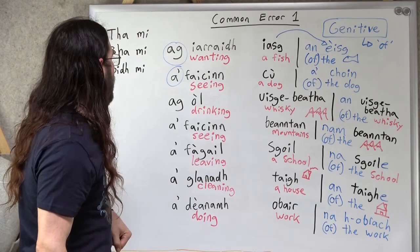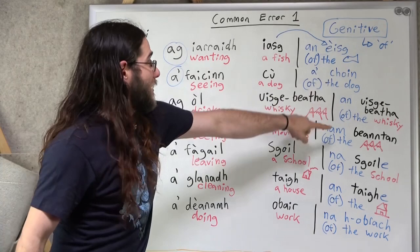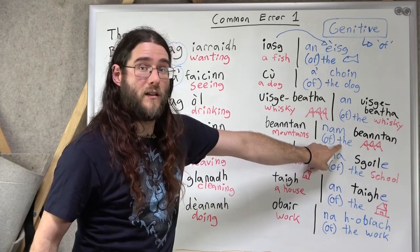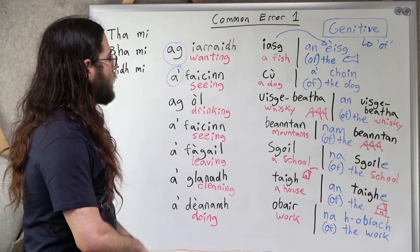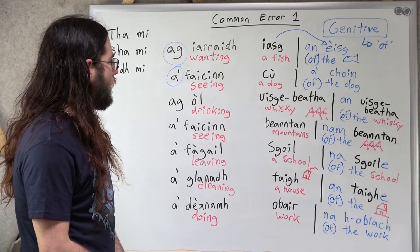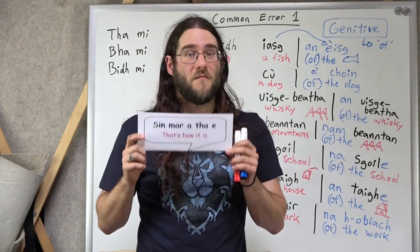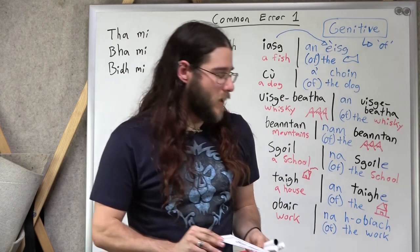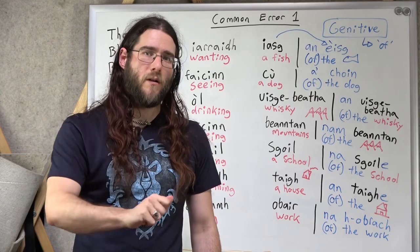Okay so we've been talking about how these words change you know how the phrases change when it's the wanting the fish seeing the dog drinking the whiskey seeing the mountains leaving the mountains maybe leaving the school cleaning the house doing the work notice all of these verbs all these actions start with ag or a' that's really important because all these changes here to these things to make it of the it happens really because this action starts with ag or a' it wouldn't happen otherwise well in certain cases yes but. Think in broad terms you know think of these as entire phrases entire phrases.